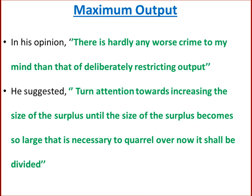The fourth principle of scientific management is maximum output. Scientific management involves continuous increase in production and productivity instead of restricted production. Taylor hated inefficiency and deliberate curtailment of production, stating there is hardly any worse crime than deliberately restricting output. He advised to turn attention towards increasing the size of the surplus until it becomes so large there is no need to quarrel over how it shall be divided.